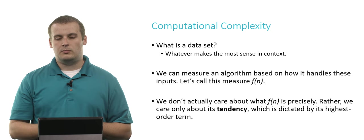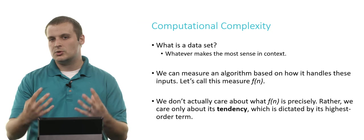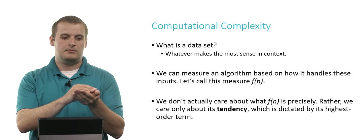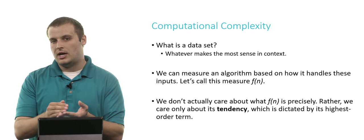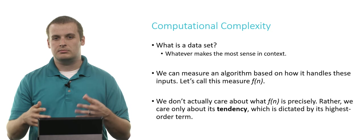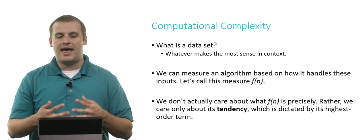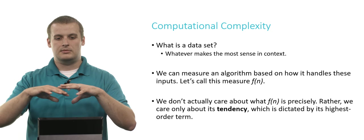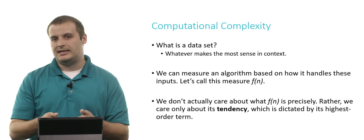Now, we can measure an algorithm. In particular, when I say we can measure an algorithm, I mean we can measure how many resources it takes up, whether those resources are how many bytes of RAM or megabytes of RAM it uses, or how much time it takes to run. And we can call this measure, arbitrarily, f of n, where n is the number of elements in the data set, and f of n is how many somethings, how many units of resources does it require to process that data.